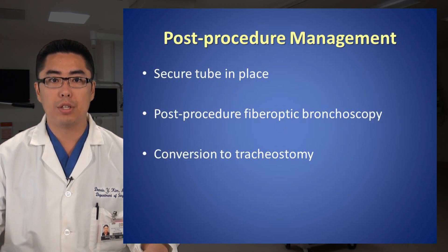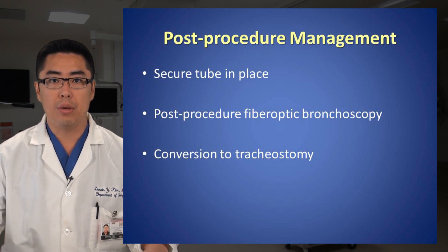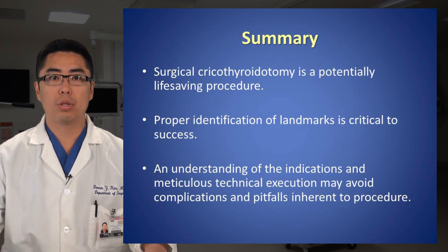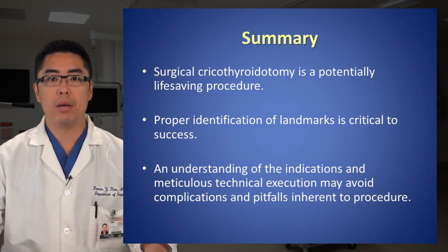Once the definitive airway is obtained, it is crucial that the tube be secured. Due to the high likelihood of aspiration in this setting, a post-procedure fiber optic bronchoscopy is highly recommended, both for tube confirmation as well as for secretion clearance. At UCSD, all patients undergoing a surgical cricothyroidotomy are brought to the operating room where they undergo a formal tracheostomy. Surgical cricothyroidotomy is a potentially life-saving procedure. Proper identification of landmarks is critical to success, and an understanding of the indications and meticulous technical execution may avoid complications and pitfalls inherent to this life-saving procedure.